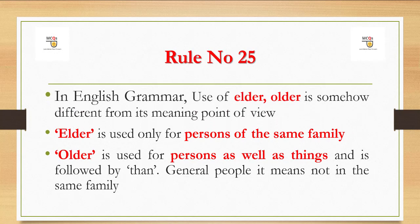In English grammar, the use of 'elder' and 'older' is somehow different from a meaning point of view. 'Elder' is used only for persons of the same family. 'Older' is used for persons as well as things, and is followed by 'than' for general people — that means not in the same family.